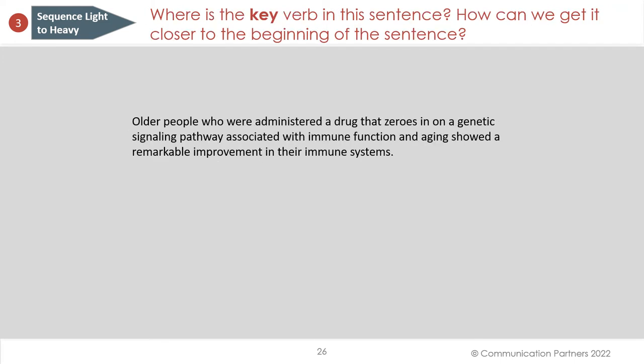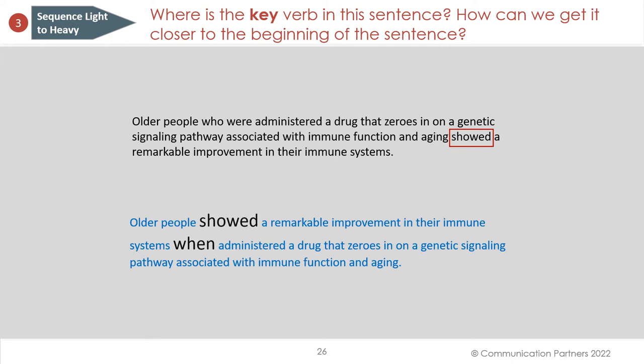Where's the key verb in this sentence, and how can we get it closer to the beginning? The key verb is 'showed,' not 'who were administered.' Revised: 'Older people showed a remarkable improvement in their immune system when administered a drug that zeroes in on a genetic signaling pathway associated with immune function and aging.' This way we get the verb just three words into the beginning of the sentence — much better light to heavy.